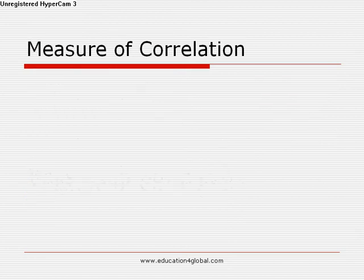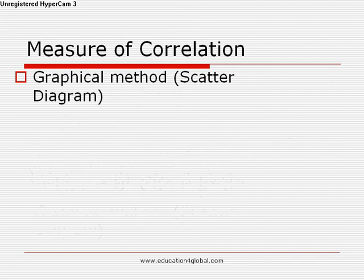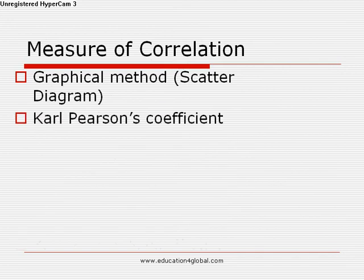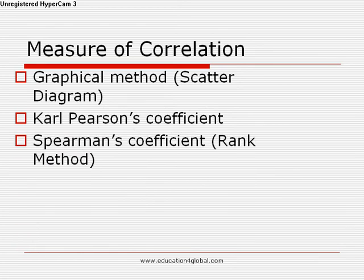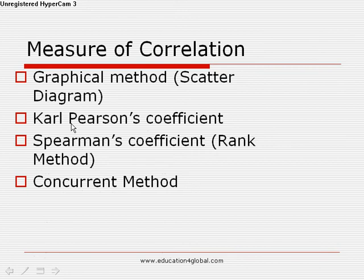Measure of correlation: we find out the degree of relationship between variables. There are four main methods. The first is the graphical method — scatter diagram. The second is the Karl Pearson coefficient of correlation. The third is the Spearman coefficient of correlation, also known as the rank method. And the fourth is the concurrent method.